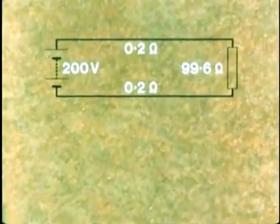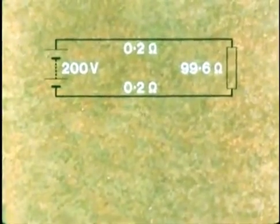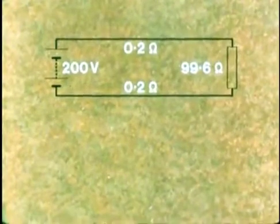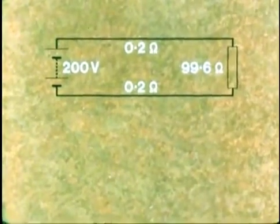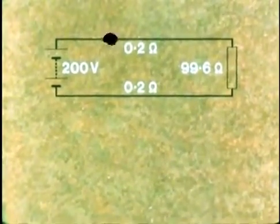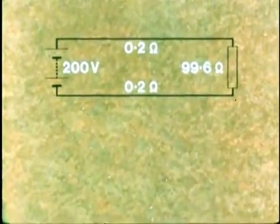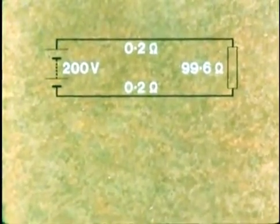Suppose we have a circuit where the resistance of each cable is known to be 0.2 ohms, and the battery is providing 200 volts to drive a current through a load of 99.6 ohms. Can we calculate the voltage drop across the load?